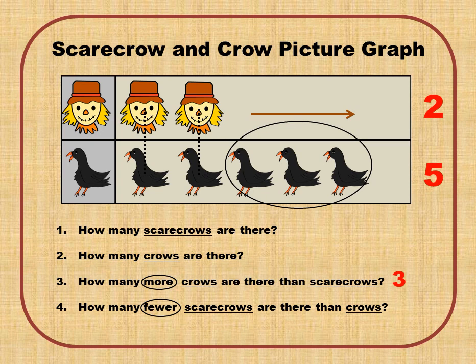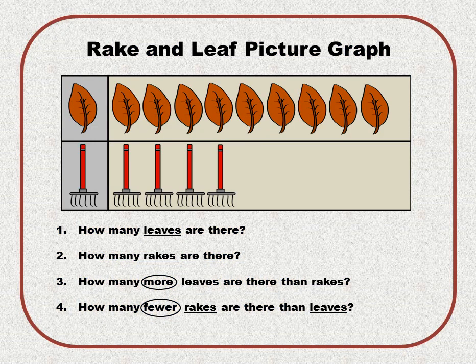So there are three more crows than scarecrows. Question number four says: how many fewer scarecrows are there than crows? Ask yourself how many crows would you have to take away in order for them to be equal — that's how many fewer there are. You'd have to take away those same three crows, so there are three fewer scarecrows than crows.